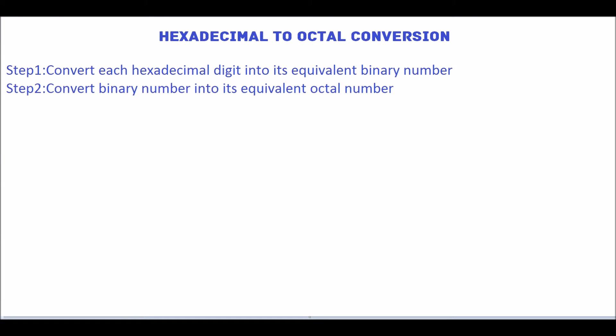In this tutorial, I will show you how to convert the hexadecimal number into its equivalent octal number. This conversion can be done in two steps. The first step is we have to convert the given hexadecimal number into its equivalent binary number.